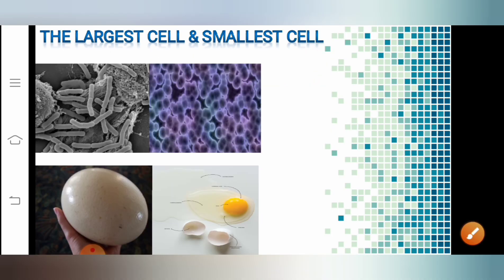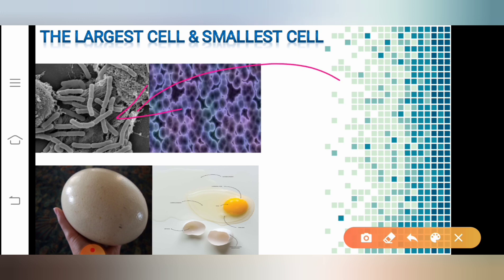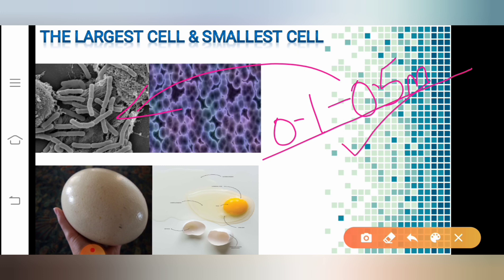Now, when I talk about the largest and smallest cell — the smallest cells are the cells of bacteria. The size of a bacterial cell ranges from 0.1 to 0.5 micrometers.